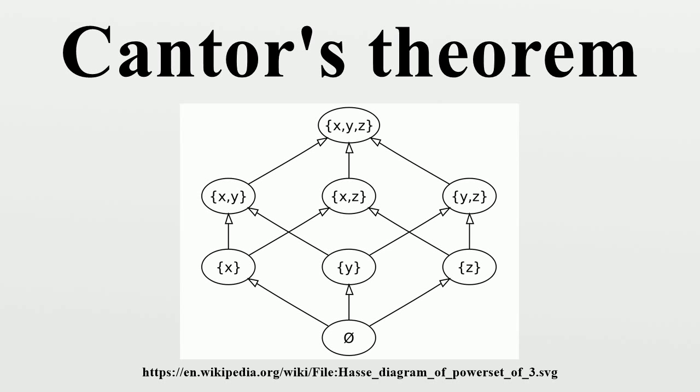Such a subset is given by the following construction, sometimes called the Cantor diagonal set of F. This means, by definition, that for all X in A,